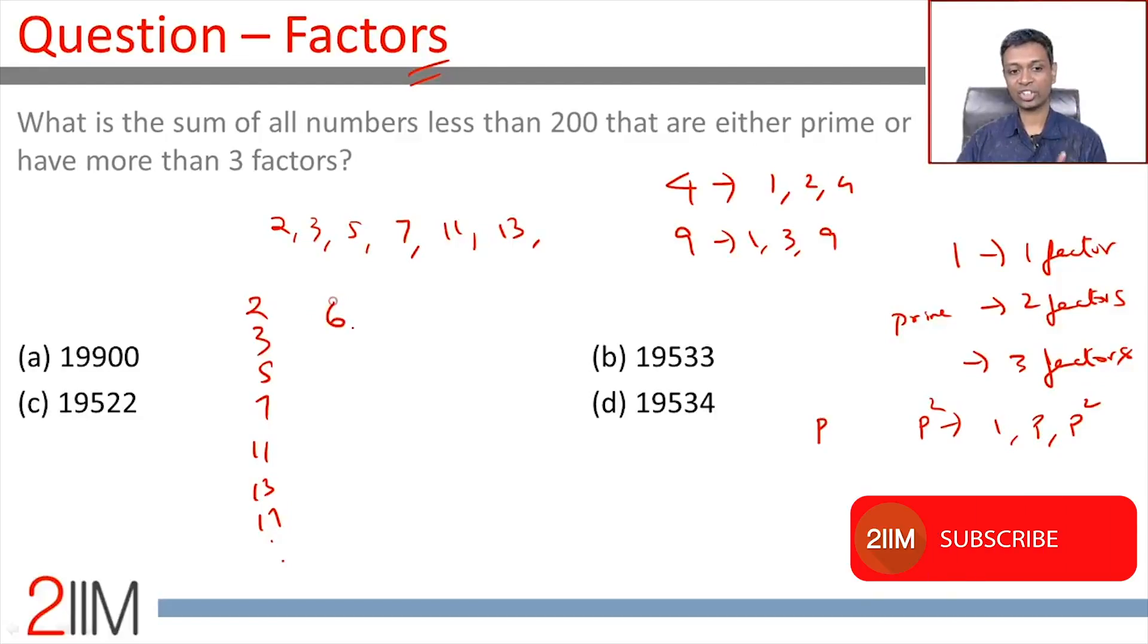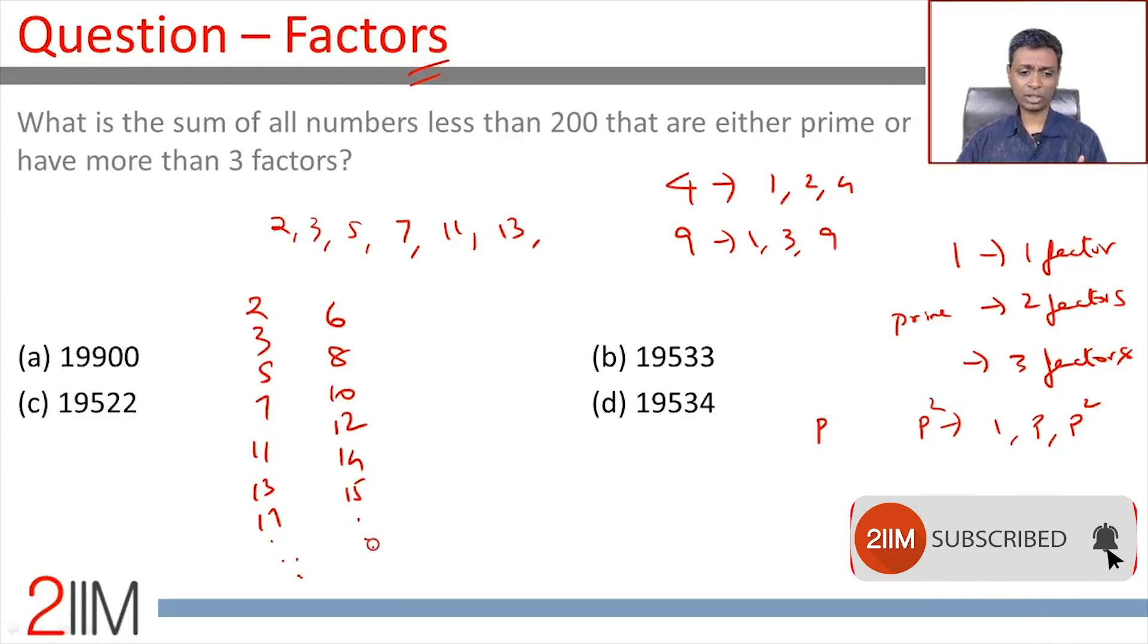6 will get counted, 8 will get counted, 9 won't get counted, 10, 12 will get counted. 13 is already in, 14 will get counted. So we're adding a bunch of numbers. We're adding too many numbers. Just wrapping our head around this takes a while.